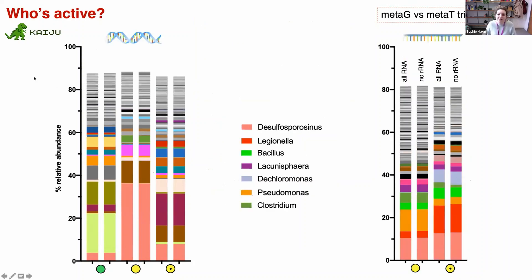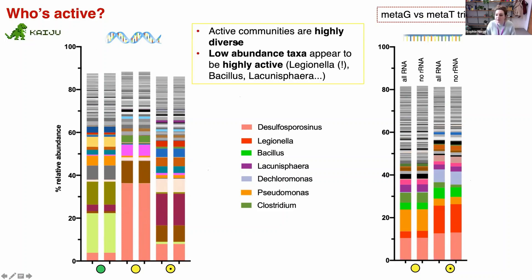Now we look at who's active. We've got the same plot based on the metagenomic reads, and when we compare these to the metatranscriptomic reads using the exact same tool, Kaiju, with the same reference databases, we see quite a different picture — which is really interesting because we as environmental microbiologists rely so much on looking at DNA. We can see that the active communities are also highly diverse, and some things that appear as very low abundance taxa in the DNA profiling appear to be highly active. Examples here would be Pseudomonas, Bacillus and also Legionella.